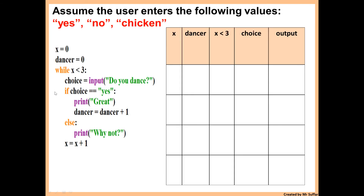Final example. We've got x equals 0, so we put 0 in x. Dancer equals 0, so 0 in dancer. x is less than 3 — is that true or false? 0 is less than 3, so yes, that's true. Then we're getting the next choice — the input is 'yes', we can see that right at the top of the question.